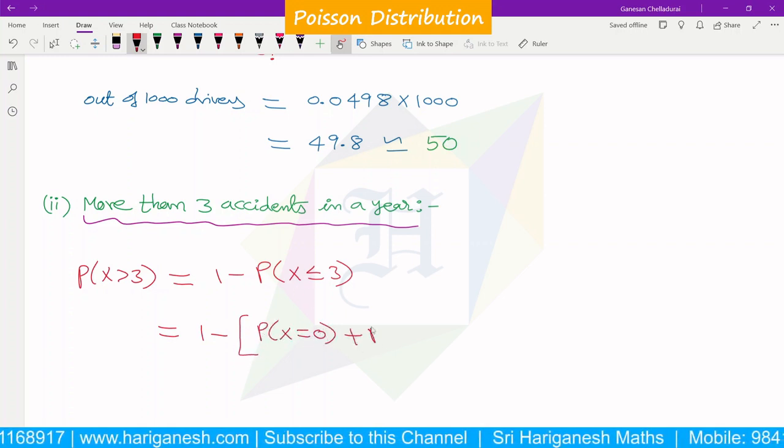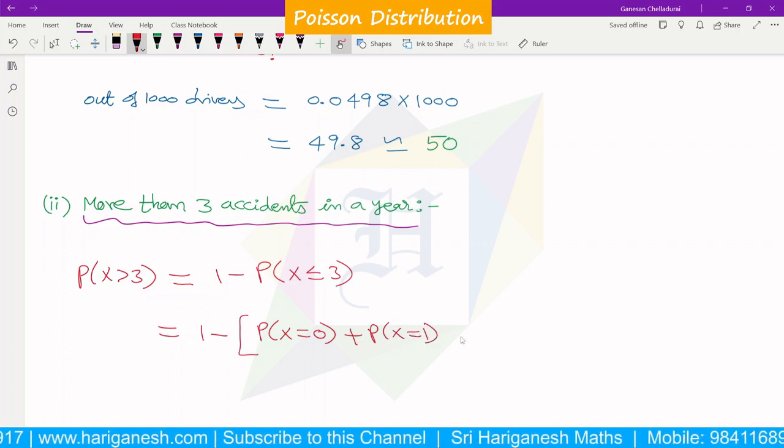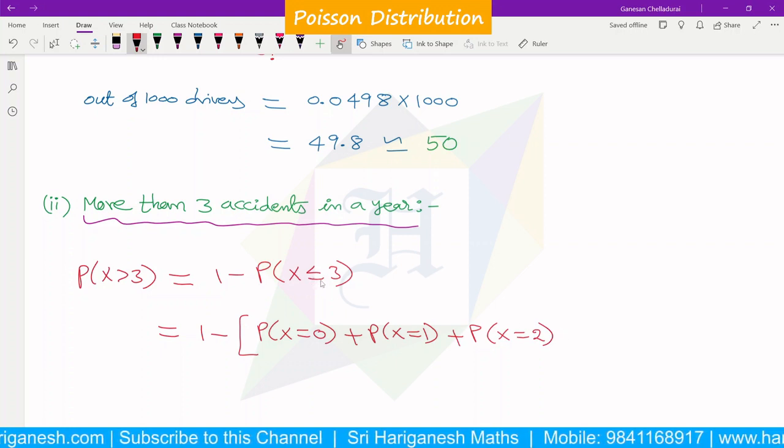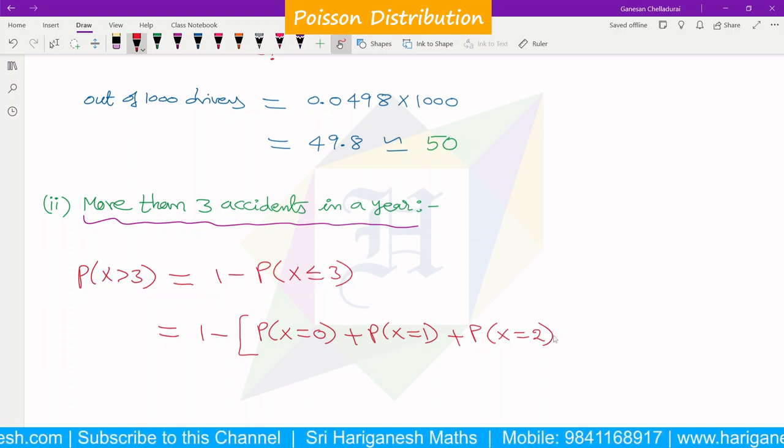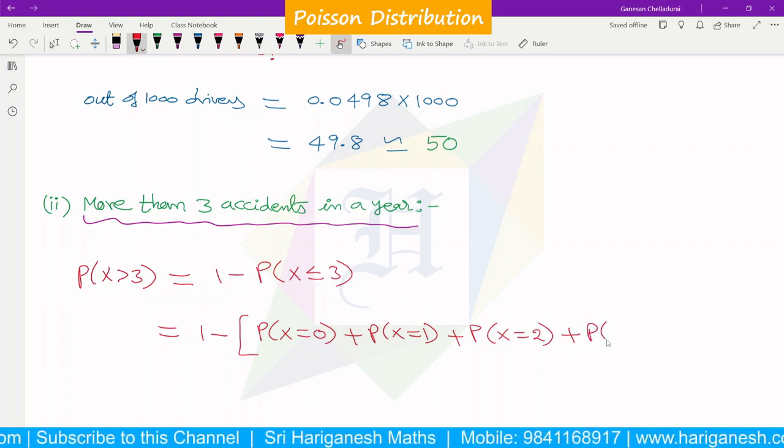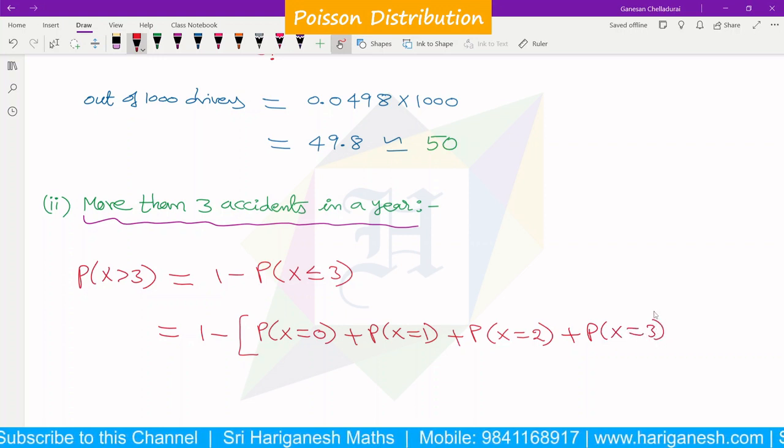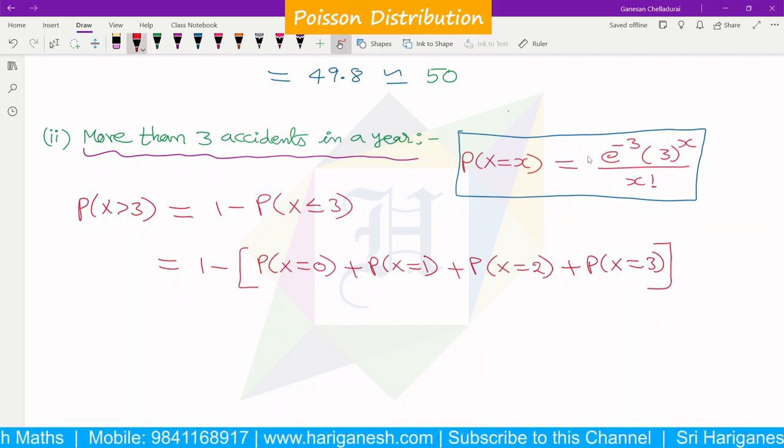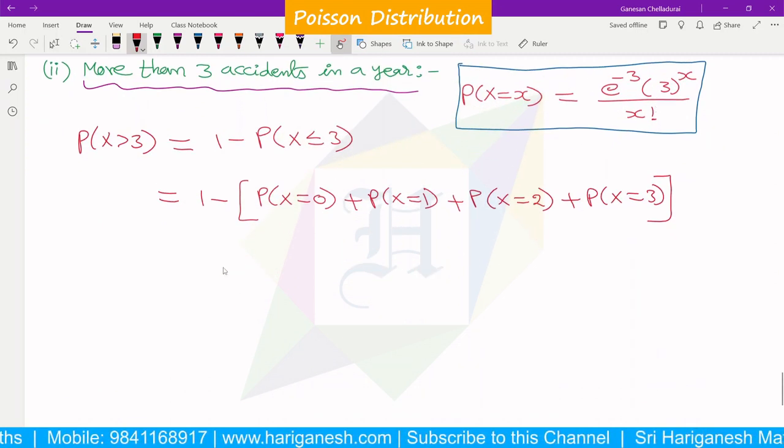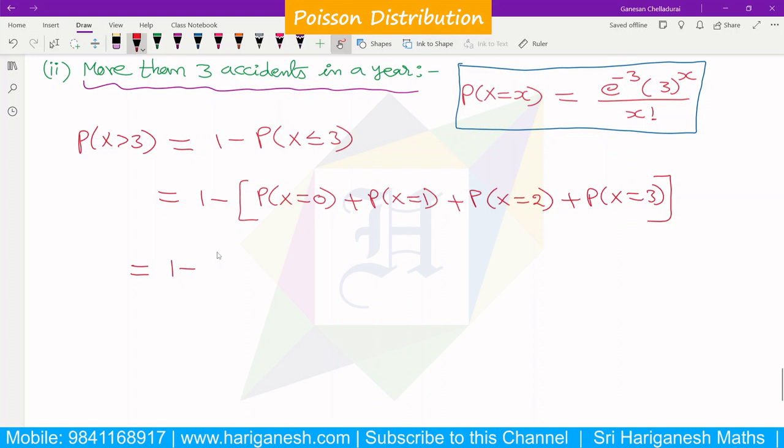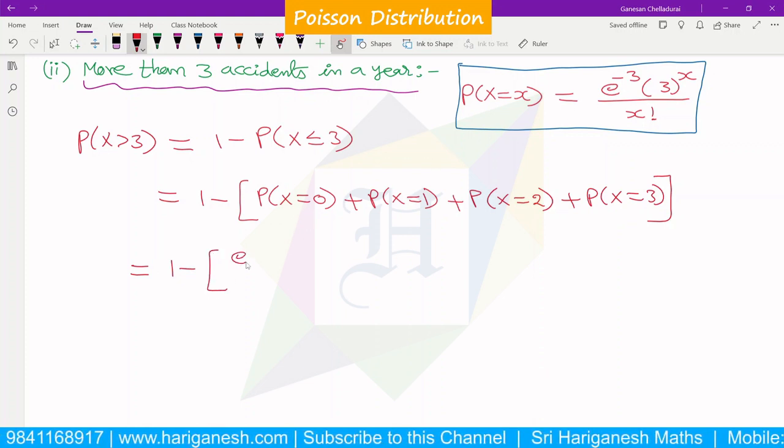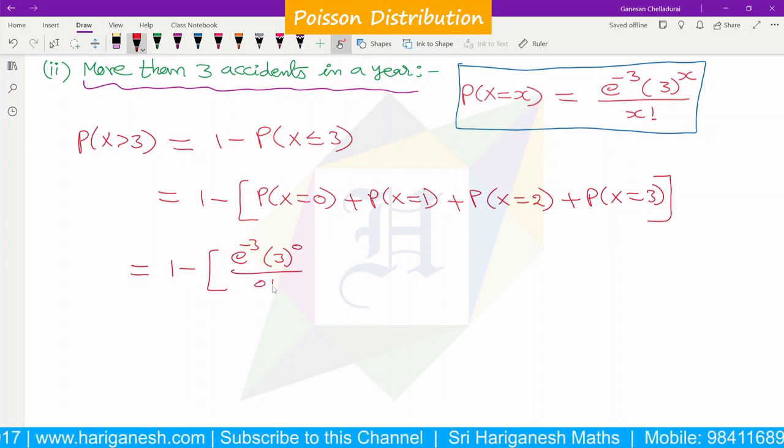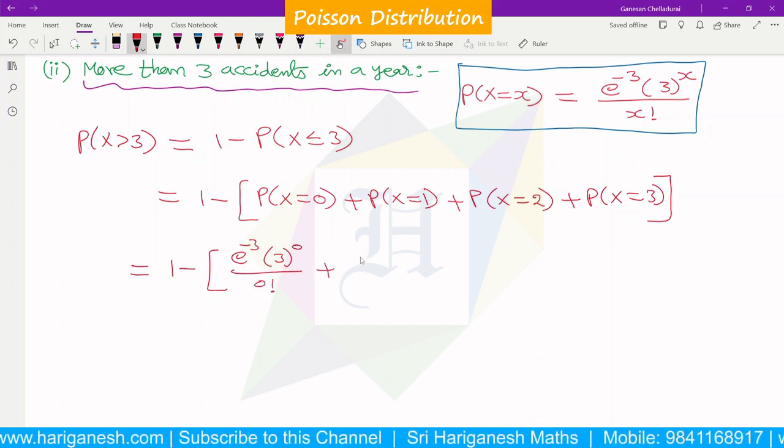So 1 minus probability of x less than or equal to 3 means x=0, x=1, x=2, and x=3. So it equals 1 minus [P(X=0) + P(X=1) + P(X=2) + P(X=3)].